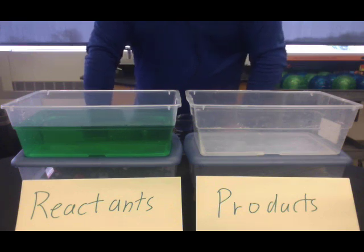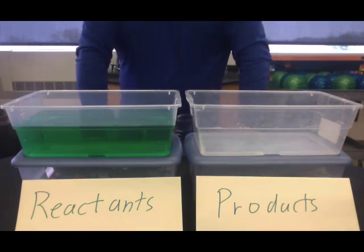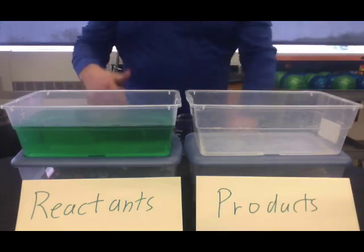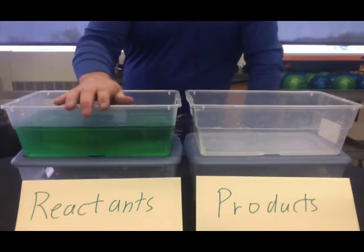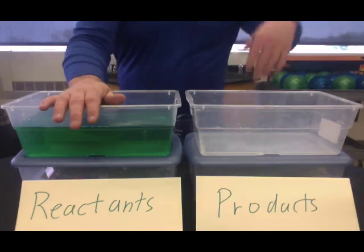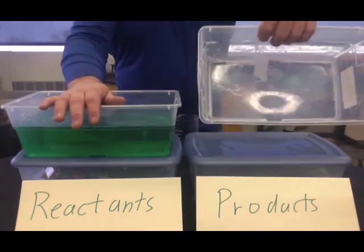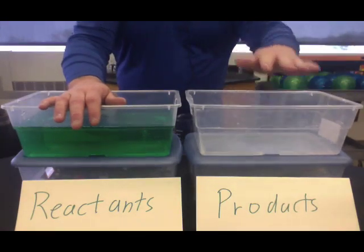Okay, this little demonstration helps us with the idea of equilibrium and reversible reactions. So what we see here, to start off we have colored water, some green water here, that represents our reactant side of our process. And then we have our empty container over here that represents our product side of the process.